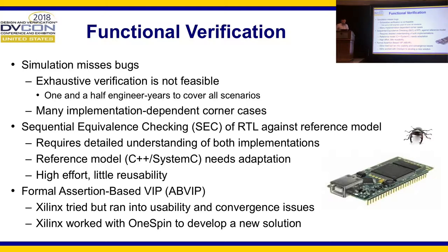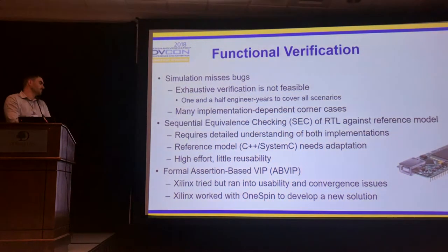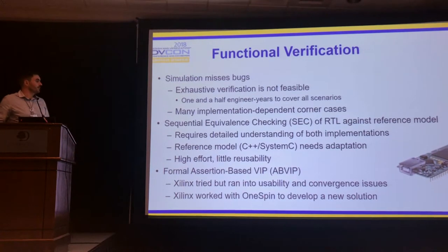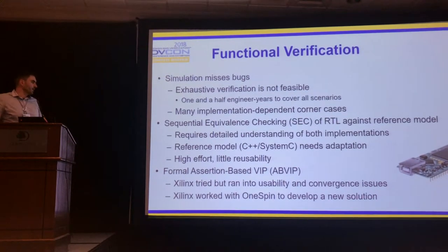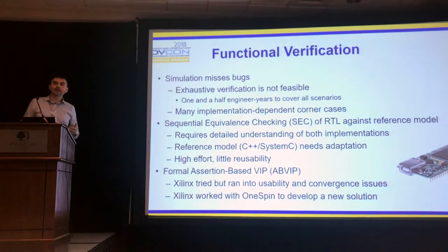Working together with a design team — specifically Ravi, the company — they approached us saying they tried various solutions and had problems with convergence, and a lot of time developing the solutions. So what can you do to solve that problem? We sat together and created a verification IP that is a new solution solving the specific problem of verifying floating point designs. A nice thing about it is it's formal-based and comes with assertions. It's a verification IP coming in plug-and-play form.